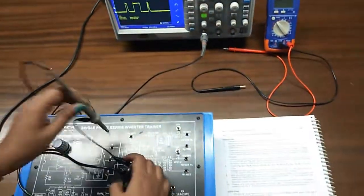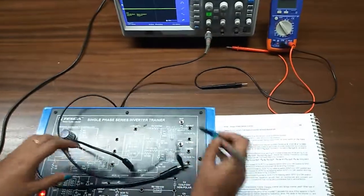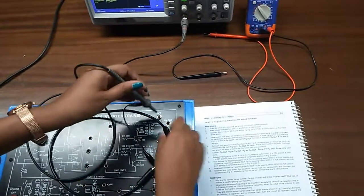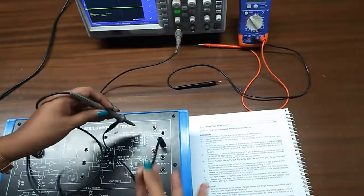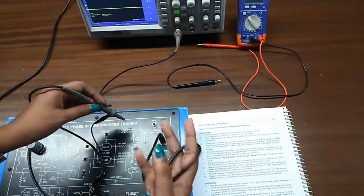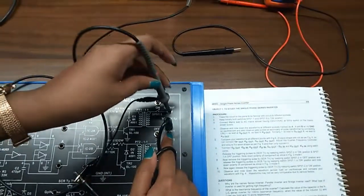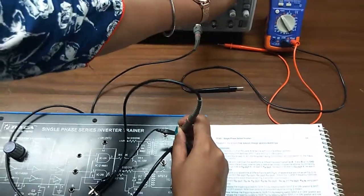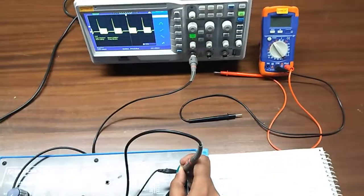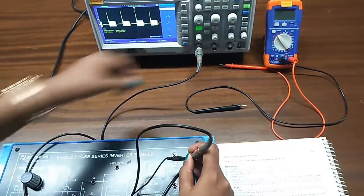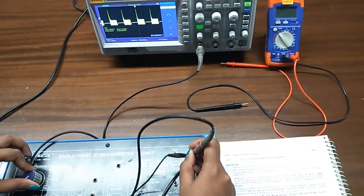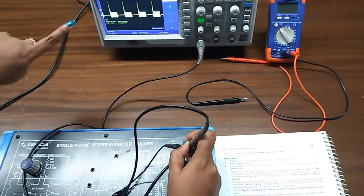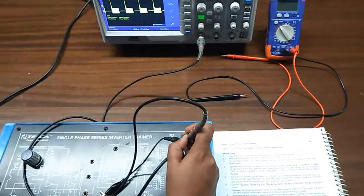Now we will observe GP out and KP out. The negative lead of the CRO will be connected with KP out, and the positive lead of the CRO will be connected with GP out. This is the waveform. These are the triggering pulses to turn on the SCR.